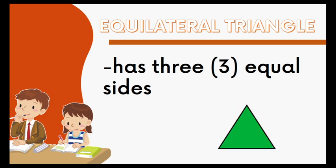So we have here our example. The first side is 14 cm, the second side is 14 cm, and the third side is 14 cm. As you can see, all of the three sides are equal or are the same. Therefore, this is an equilateral triangle.